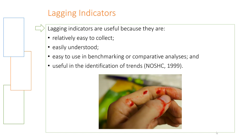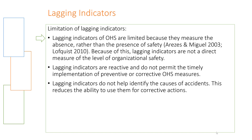Lagging indicators have their uses: they are relatively easy to collect, easy to understand, and useful in benchmarking or comparative analysis — for example, comparing one company's accident rate to another's. They are also very useful in the identification of trends.